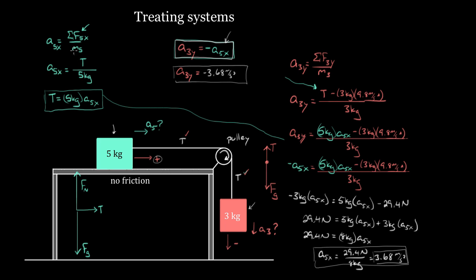Turns out there's a trick. After you solve this problem the hard way with a five kilogram mass and a three kilogram mass, when you find the acceleration, what you get is that the acceleration of the five kilogram mass is just 29.4 divided by eight kilograms. When you do enough of these, you might start realizing: 29.4 Newtons was just the force of gravity pulling on this three kilogram mass — the only external force propelling this whole system forward. And eight kilograms is just five kilograms plus three kilograms. Is that just a coincidence, or is this telling us something deep and fundamental? It's not a coincidence.